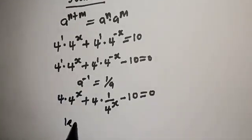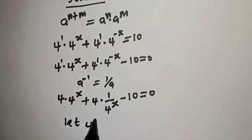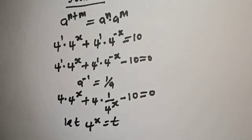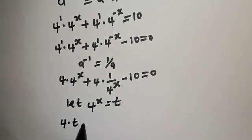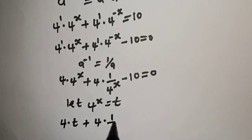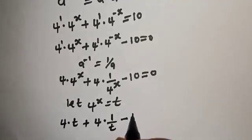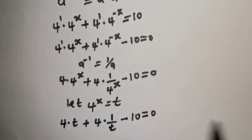Now let t equal 4 raised to power x. Substituting, we have 4t plus 4 multiplied by 1 over t, minus 10 is equal to 0.